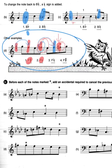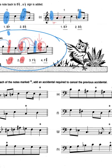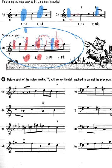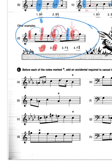Alright, and here's an exercise. Before each of the notes marked with a star, add an accidental required to cancel out the previous accidental.